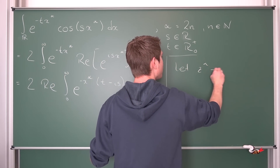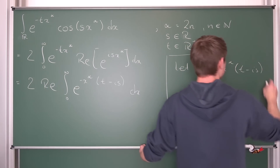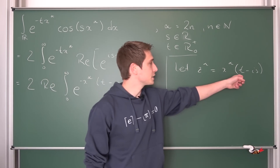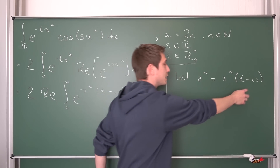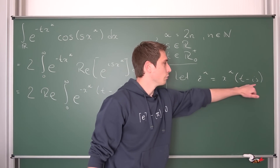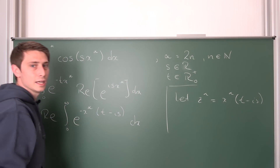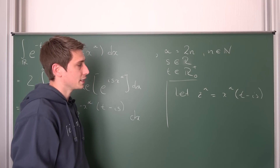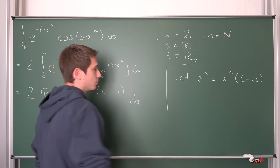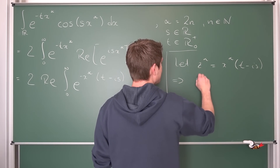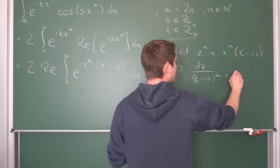Let z to the alpha be equal to x to the alpha times (t minus i·s). Now we can divide both sides by (t minus i·s) — it's never going to be equal to zero because t is a real number and we can't really get rid of our imaginary part except when both are equal to zero, but then our integral is just trivially zero. So divide both sides by it, take the alpha root on both sides, and implicitly differentiate, leaving us with d z over (t minus i·s) to the one over alpha equals d x.